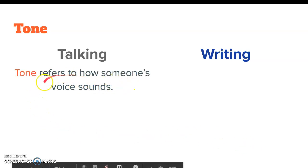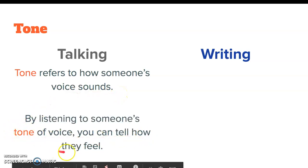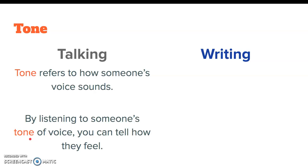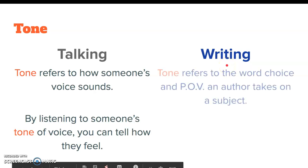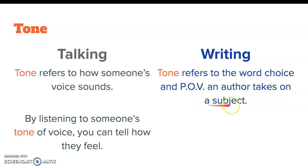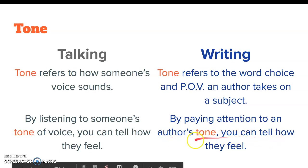We're going to talk about tone next. Tone can mean something different when referring to talking versus referring to writing. In talking, tone refers to how someone's voice sounds. By listening to someone's tone of voice, you can tell how they feel. If someone sounds angry, they have an angry tone. If someone sounds happy, they have a happy tone. In writing, tone refers to the word choice and the point of view an author takes on a subject. Since we can't hear writing out loud, the best we can do is look at the words they chose and try to figure out the opinion they're getting across.